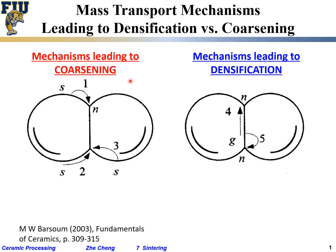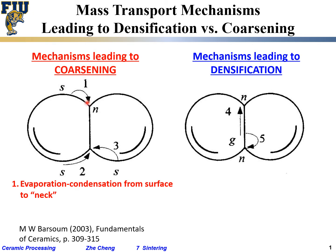Let's first look at the mechanisms that lead to coarsening. A previous researcher labeled three types: one, two, and three. The first one involves material that evaporates and then goes through the gas phase to condense at the neck — evaporating from the surface with small positive curvature and condensing into the neck through the gas phase. That's mechanism one.